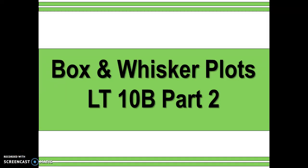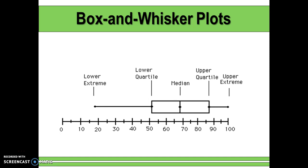Today we are looking at learning target 10B, the second part, which focuses on box and whisker plots. A box and whisker plot shows a summary of the data by comparing it to a number line, letting you see how spread out the data is. It breaks that data up into quartiles.